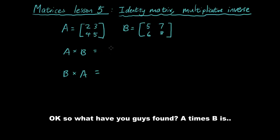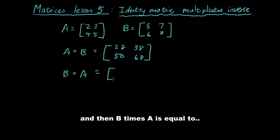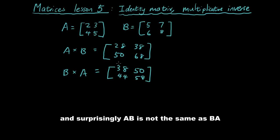Okay, so what have you guys found? Well, A times B is equal to 28, 38, 50, 40, and 68. And then B times A is equal to 38, 50, 44, 58. And surprisingly, A times B is not the same as B times A.